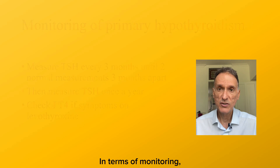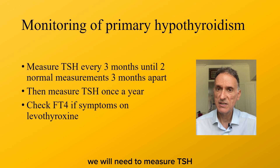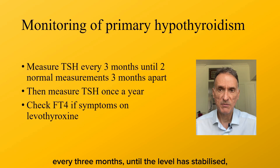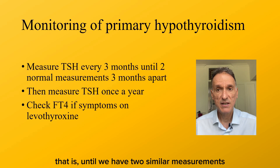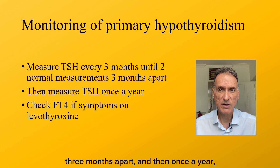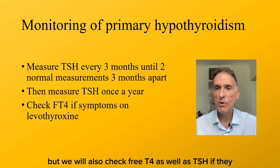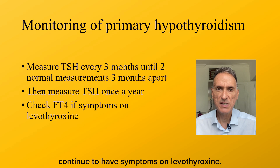In terms of monitoring, we will need to measure TSH every three months until the level has stabilised — that is, until we have two similar measurements within the reference range three months apart — and then once a year. We will also check free T4 as well as TSH if they continue to have symptoms on levothyroxine.